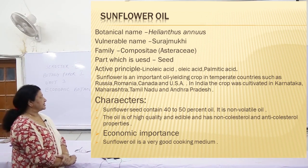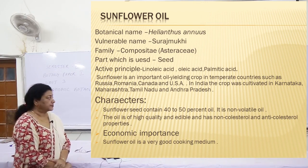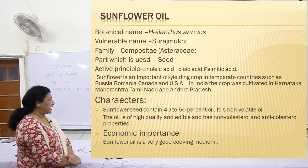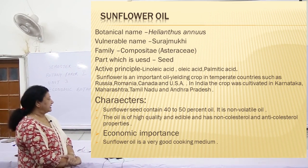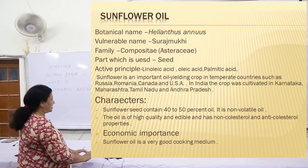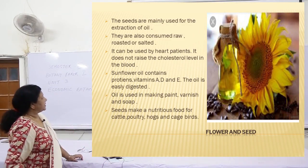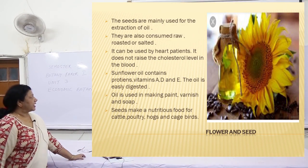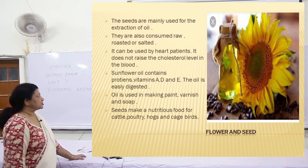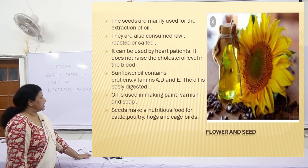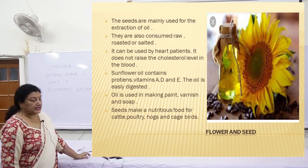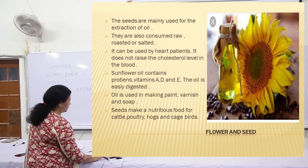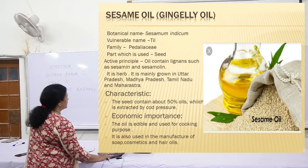In India, sunflower is cultivated in Karnataka, Maharashtra, Tamil Nadu and Andhra Pradesh. Sunflower seed contains 40 to 50 percent oil. It is non-volatile, of high quality, edible, and has non-cholesterol and anti-cholesterol properties. Sunflower oil is a very good cooking medium; it can be used by heart patients as it does not raise the cholesterol level in the blood. The seeds are also consumed raw, roasted or salted. Sunflower oil contains proteins, vitamins A, D and E, and is easily digested. It is also used in making paint, varnish and soap. Seeds provide nutritious food for cattle, poultry and cage birds.